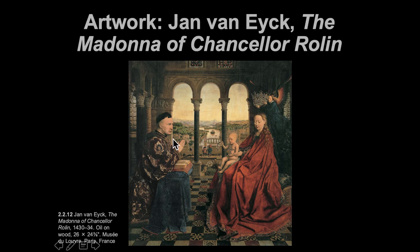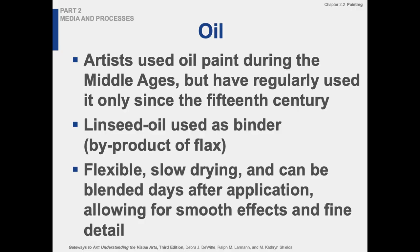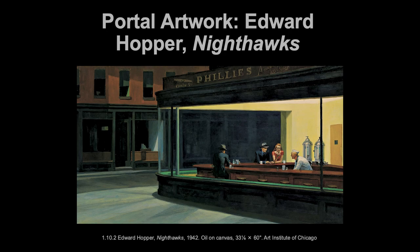We looked at The Ambassadors too, and that has that level of detail as well. So I'm going to backtrack. This is oil on wood. What happens more during the Renaissance is it shifts from wood to canvas, and of course almost everything after that is oil on canvas.